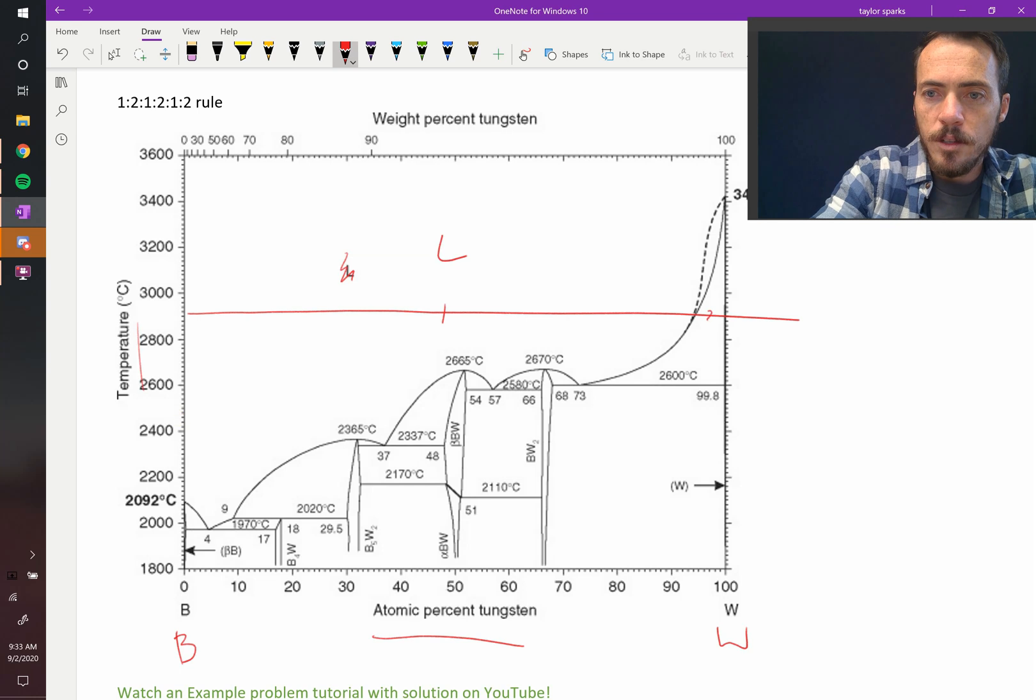Therefore, the one right next to it must be a 2-phase region. You can ignore this dotted line for now, pretend that's not there. If that's 2 and you know that the end member is pure tungsten, then this must be, right at the end, a 1-phase region, which is pure tungsten.